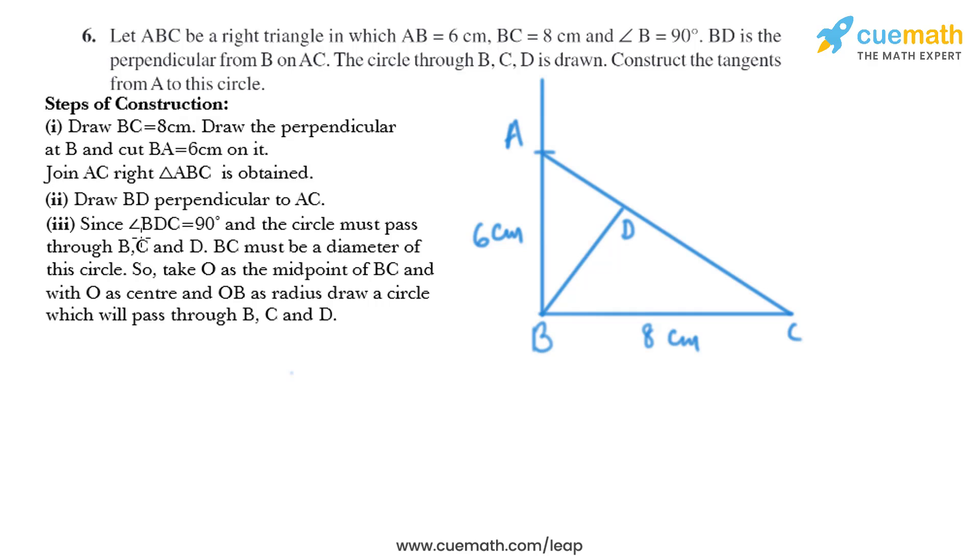Now in the next step, since angle BDC equals 90 degrees, the circle must pass through B, C, and D. BC must be the diameter of this circle. So take O as the midpoint of BC and with O as center and OB as radius, draw a circle which will pass through B, C, and D. So we'll take the radius as OB and draw a circle that passes through points B, C, and D like this.